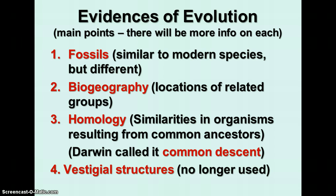The four evidences are: fossils that are similar to modern species but different; biogeography, which has to do with locations of related groups of fossils; homology, which is similarities in ancestor organisms — Darwin called this common descent; and vestigial structures, which are structures that are no longer used or are reduced in size.